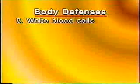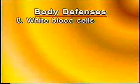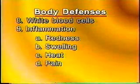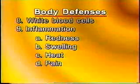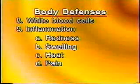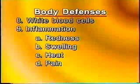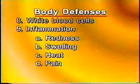White blood cells are a certain type of blood cells that destroy and devour pathogens that make it into the bloodstream. Inflammation is another defense in that it is a process that brings blood to the area of infection. Signs of inflammation are redness, swelling, heat, and pain. It is actually a defense that the body has to localize the infection and keep it from spreading to all other parts of the body.